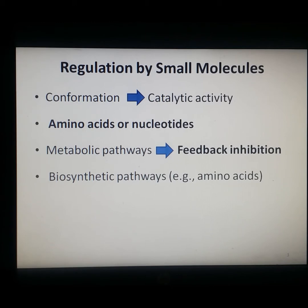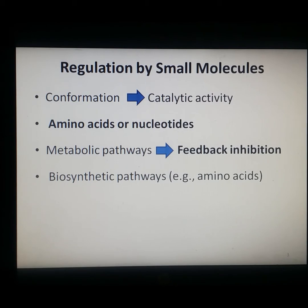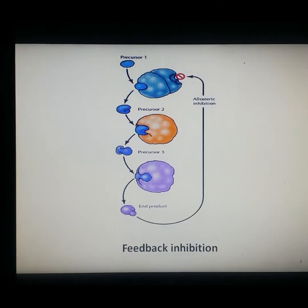For example, in amino acid biosynthetic pathways, the end products inhibit the enzymes that catalyze the first step in synthesis. This ensures an adequate supply of product while preventing the synthesis of excessive amounts. Here is the diagrammatic representation of feedback inhibition, where the end product of the biochemical pathway acts as an allosteric inhibitor of the enzyme catalyzing the first step in its synthesis.